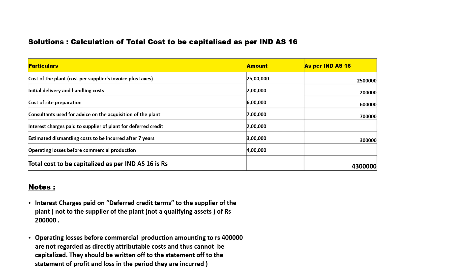In the solution, you need to make a table titled 'Calculation of Total Cost to be Capitalized as per Indian Accounting Standard 16.' In the particulars column, copy the items from the problem. In the amount column, write all the amounts given. In the solution column, include all particulars related to the installation of the new plant.